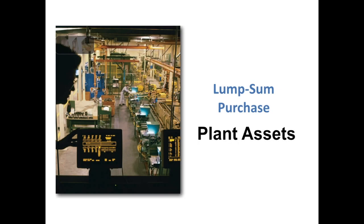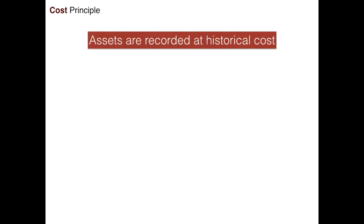Hi everyone. In this series of videos we're going to be talking about plant assets, and in this first video we're going to look at the lump sum purchase. To get into that concept we really first need to introduce the cost principle again. This should be a review from your earlier accounting chapters, but remember the cost principle states that assets are recorded on the books at historical cost.